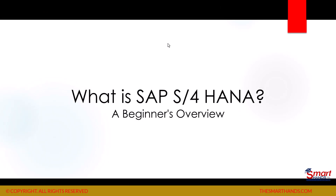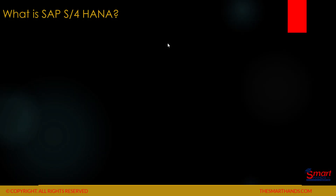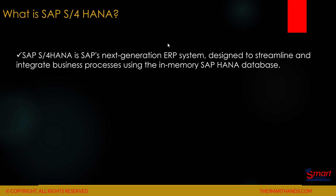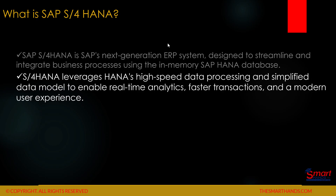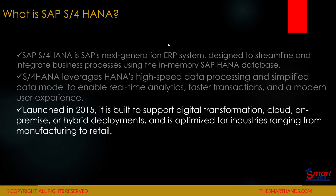Now we'll learn what is SAP S4 HANA. S4 HANA is SAP's next generation ERP system designed to streamline and integrate business processes using the in-memory SAP HANA database. S4 HANA leverages HANA's high-speed data processing and simplified data model to enable real-time analytics, faster transactions and a modern user experience. It was launched in 2015 and is built to support digital transformation — cloud, on-premise or hybrid deployments — and is optimized for different industries such as manufacturing, retail, pharmaceutical, and automobile.